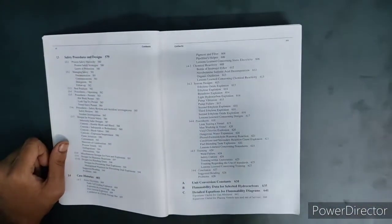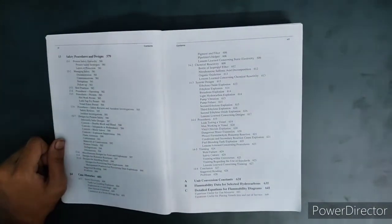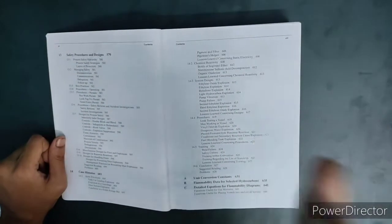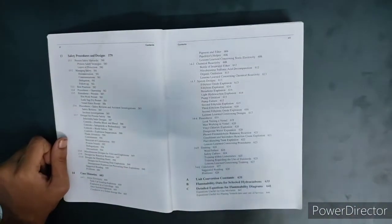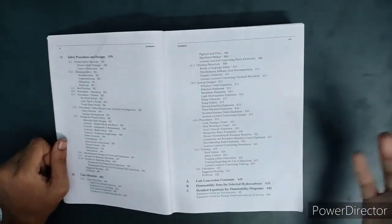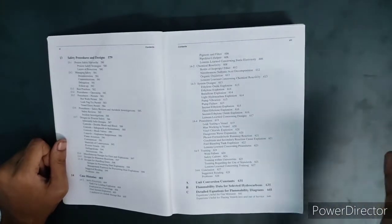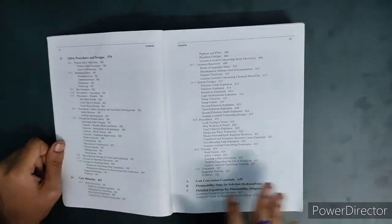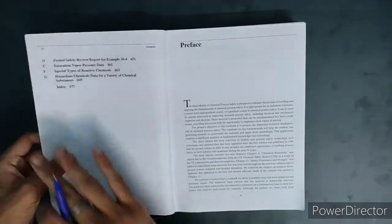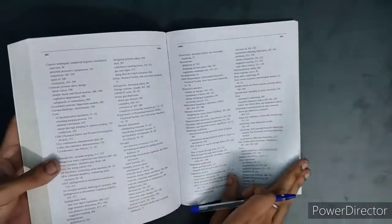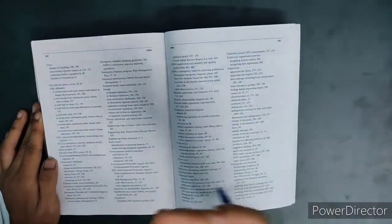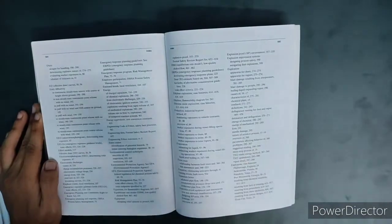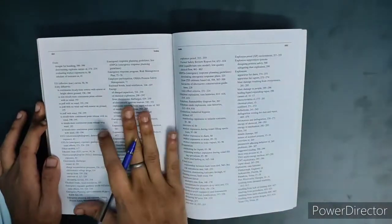Chapter number 14 is not an official chapter. In that particular chapter they are going to tell you about different case studies and what type of learning you can take from these particular accidents which happened previously in the world. After that, there is a lot of technical data they have given in the last, like TLV of different chemicals, chemical reactivity and stability of different chemicals, which is going to be useful if you are using that book as a reference guide.